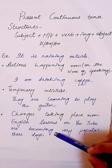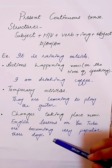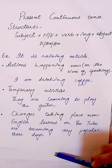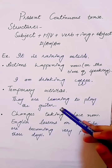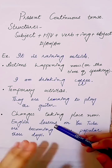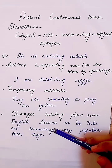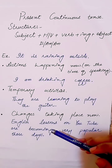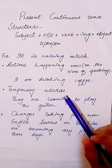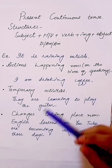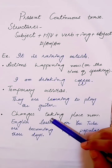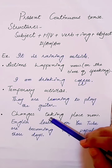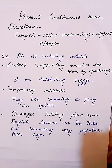The third use of present continuous tense is changes taking place now. The example is 'English lessons on YouTube are becoming very popular these days,' meaning the popularity is increasing. Another example: 'Scientists say that the earth is getting warmer.' So remember, present continuous tense is used to talk about actions happening now, temporary activities, and changes that are taking place. I hope you can now differentiate between present simple and present continuous tense.